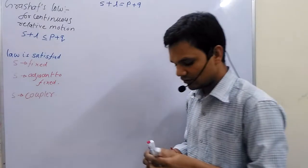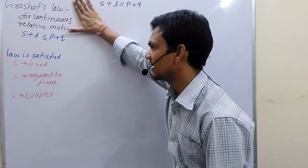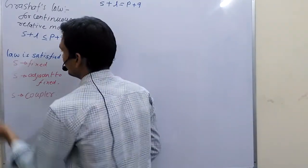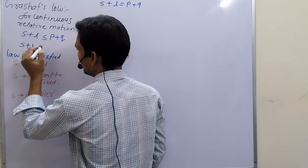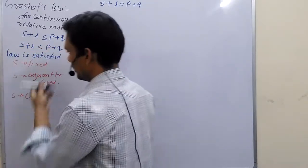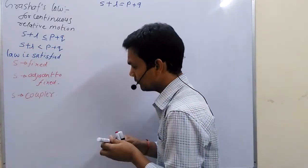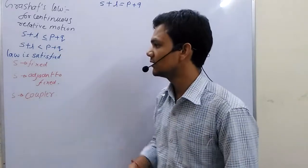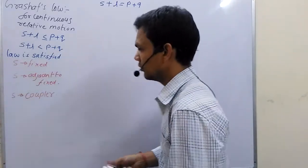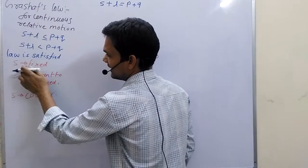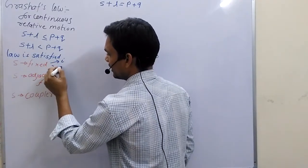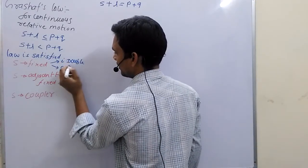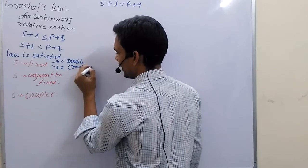This is the statement of Grashof's Law. To understand it, let me satisfy some conditions. If S plus L is less than P plus Q, the law is satisfied because the summation of the smallest and largest link is less than the other two links. With the smallest link at a fixed position, it operates as input and output link and we obtain a double crank mechanism.